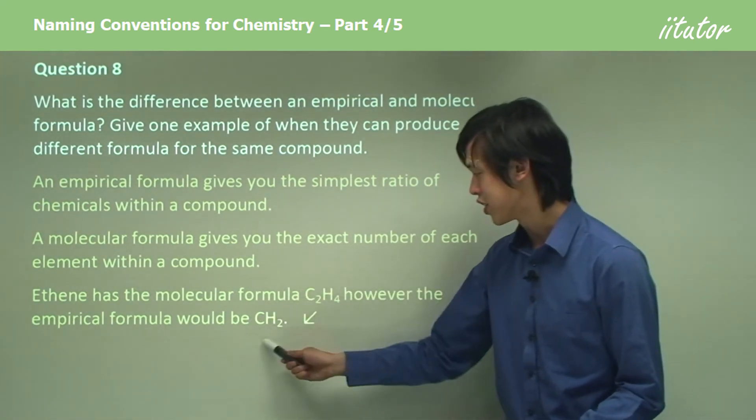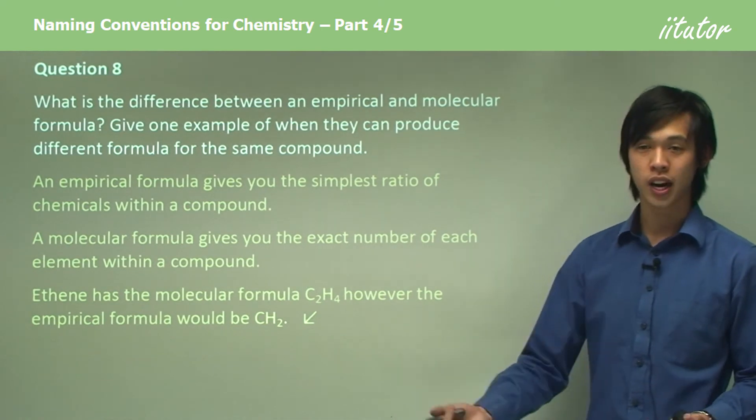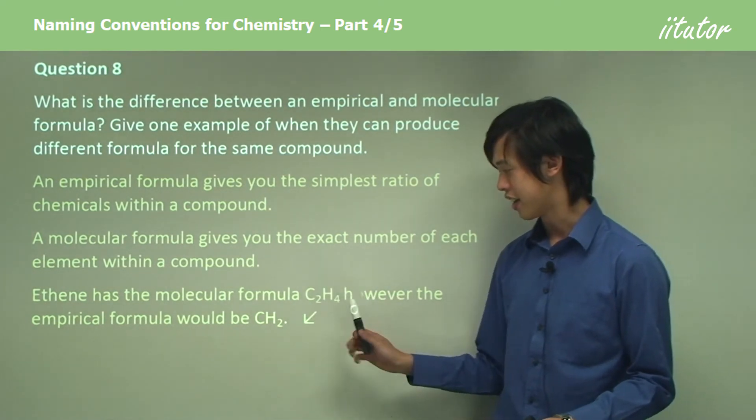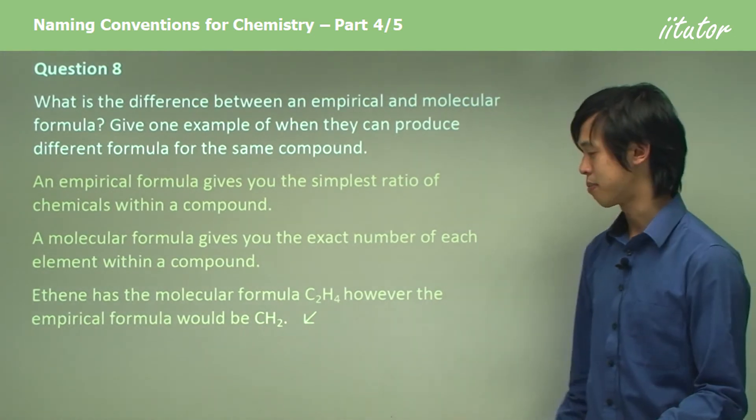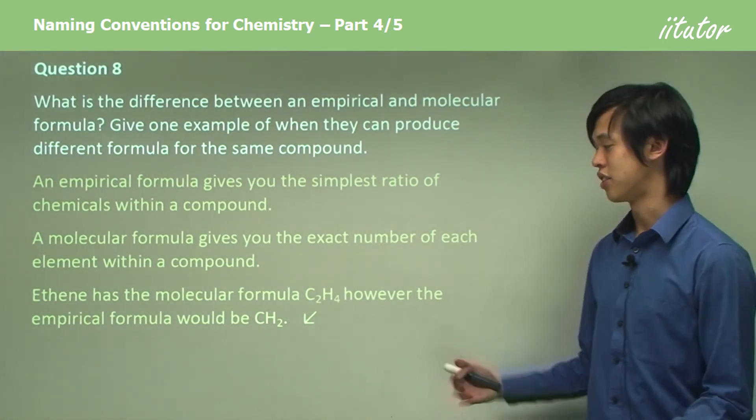So this is the simplest ratio—for every one carbon, there are two hydrogens. And you can see that here: for every one carbon, there are two hydrogens. So it does present the same information, just in a different way.